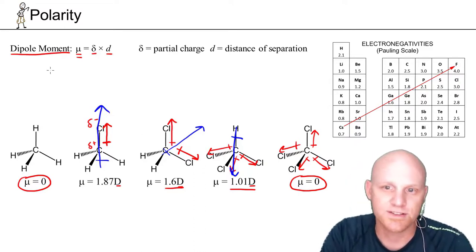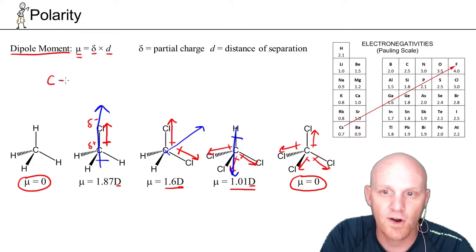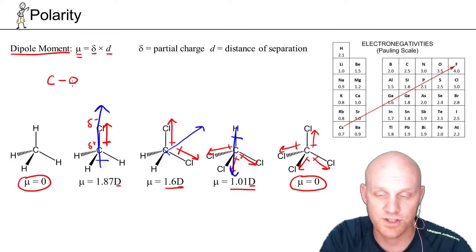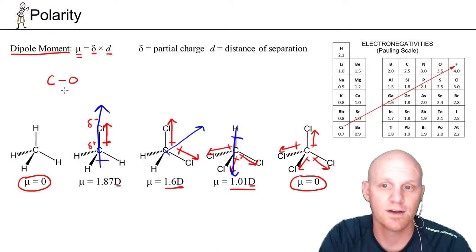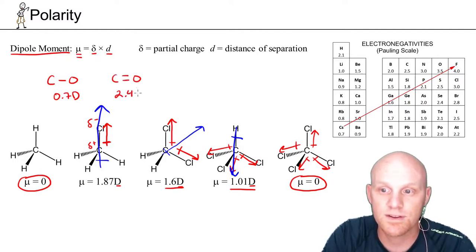Now there's one other thing we should address here, and that's the difference between a single bond and a double or triple bond. If I looked at a carbon-oxygen single bond, we can do calculations of dipole moments for single bonds or just an individual bond rather than a molecule as well. And for a carbon-oxygen single bond, it turns out it's 0.7 debye. But for a carbon-oxygen double bond, it is significantly larger, more than three times larger at 2.4 debye. And we've got to explain that.